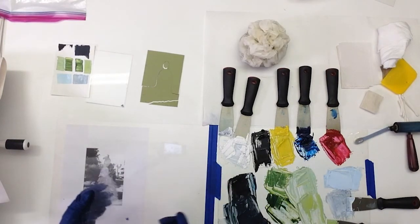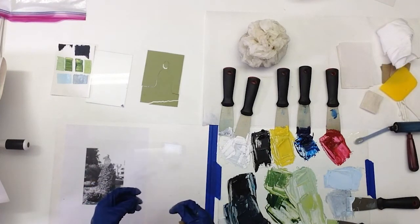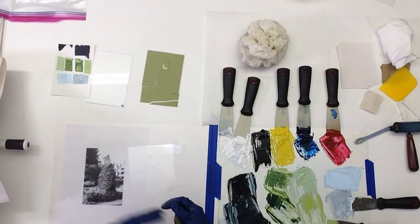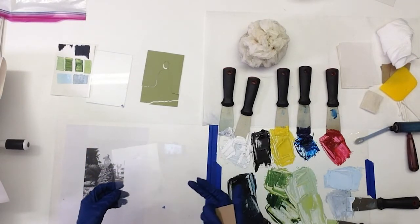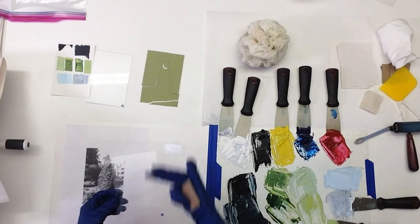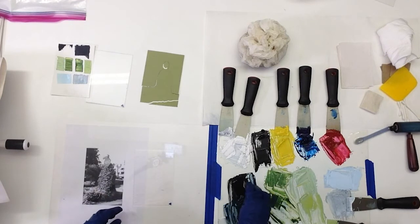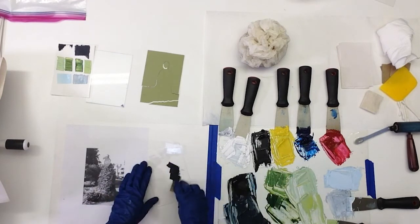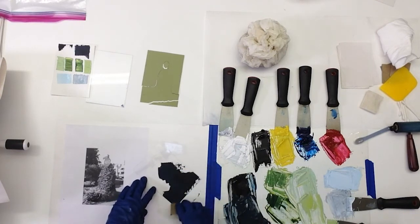And now to begin inking. There are a few different options when it comes to inking up your dry point plate. You're welcome to ink all the same color, or I'm going to do what's called a la poupe printing, and that means I'm going to be applying multiple colors of ink to my plate simultaneously. When I'm carding on the ink, I'm trying to use very light pressure because the burrs of the plate are very fragile and I don't want to accidentally crush the burrs.